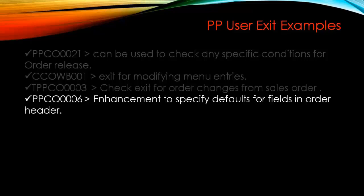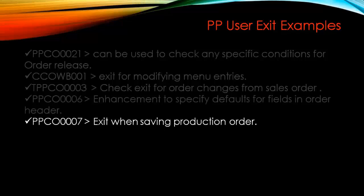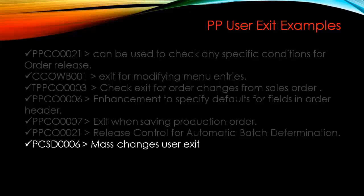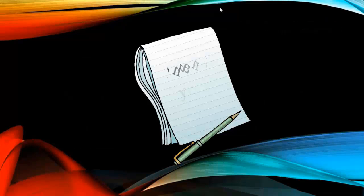There is an enhancement to specify default values for fields in the order header, so when you open or create the order, certain fields have a default value such as a date. There is also an exit for when saving the production order, to perform a specific check at save time. Another exit handles release control for automatic batch determination. Finally, there is a mass changes user exit used with transactions like COIS, allowing you to add extra functionality to mass change operations.